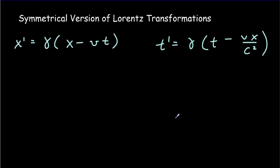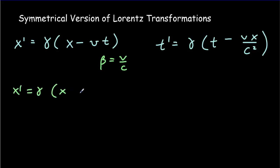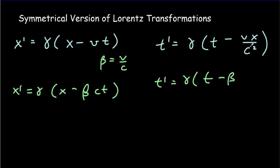Here are the two original Lorentz transformation equations. We're going to make the two equations look symmetrical by introducing beta, which is just the fraction v over c — so if moving at 60% the speed of light, beta equals 0.6. In the first equation, replace v with beta times c. In the second equation, v over c becomes beta, and we still have an x over c. Then multiply the second equation through by c, giving ct-primed equals gamma times ct minus beta times x.